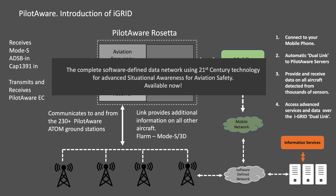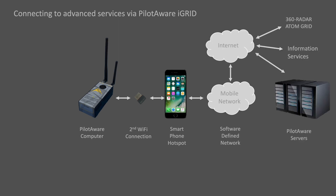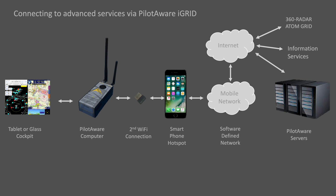An example of this is the rain weather data now provided by the latest software release. Making the connection from PilotAware to iGrid is simple. A wi-fi connection is made to your smartphone hotspot, which then connects to the internet via the mobile phone network and hence to the PilotAware servers. Data is then passed to the electronic flight bag, smart tablet or glass cockpit by the PilotAware device.